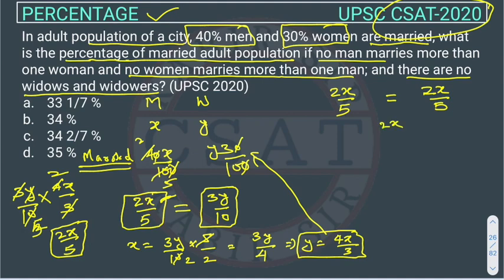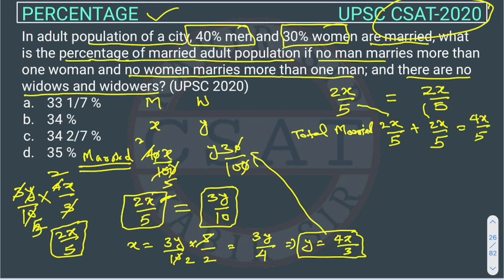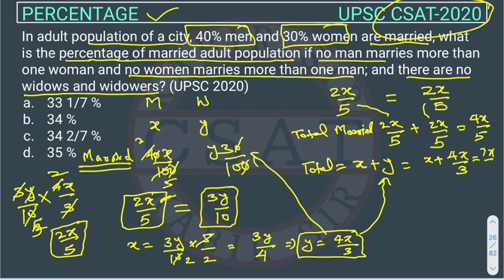Total married adult population = 2x/5 + 2x/5 = 4x/5. Now we also need the total population. Total men = x, total women = y = 4x/3. So total population = x + 4x/3 = 7x/3.